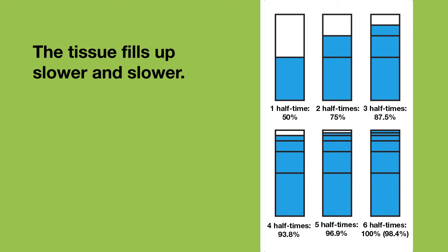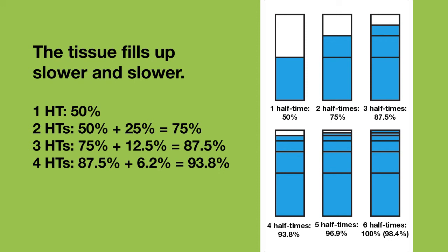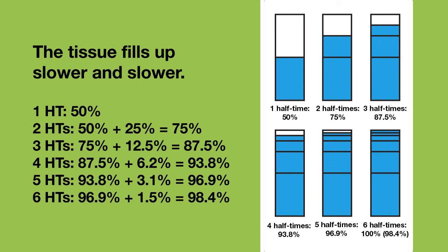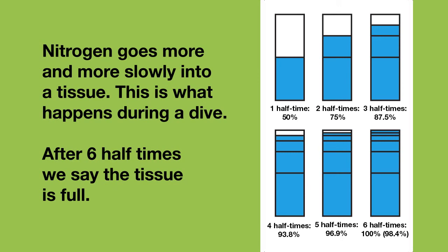You can see that with this trick the tissue fills up slower and slower over time. At one half time, the tissue is 50% full. At two half times, the tissue is 50% plus 25%, so 75% full. At three half times, the tissue is 75% plus 12.5%, so 87.5% full, and so on. After six half times, the differences have become so small, we can safely say that the tissue is full.